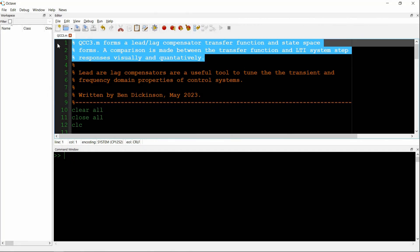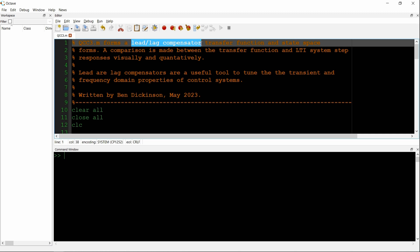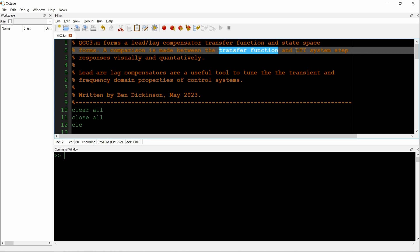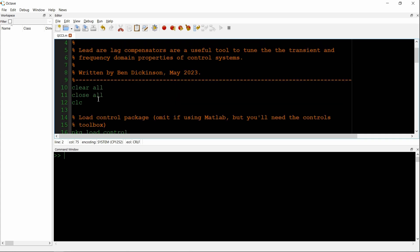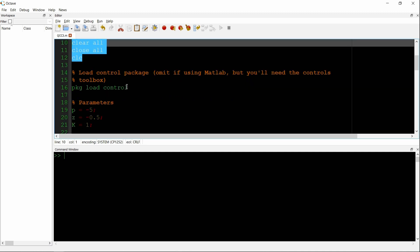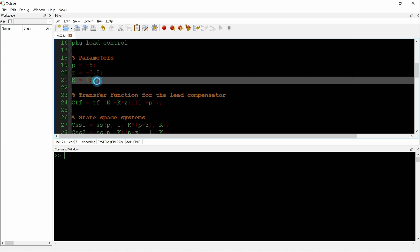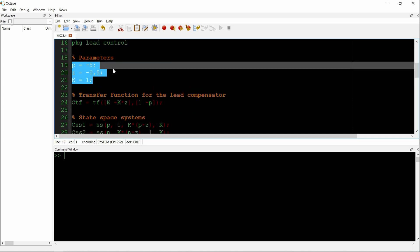Here we are in Octave. We're going to create the lead compensator in the example with this script. This will involve the transfer function and both LTI systems. And then we'll visually and quantitatively compare the results. So we're going to clear all, close all, load the control package because we're in Octave. If you're in MATLAB, you'll need the controls toolbox. And then pole, zero, gain.